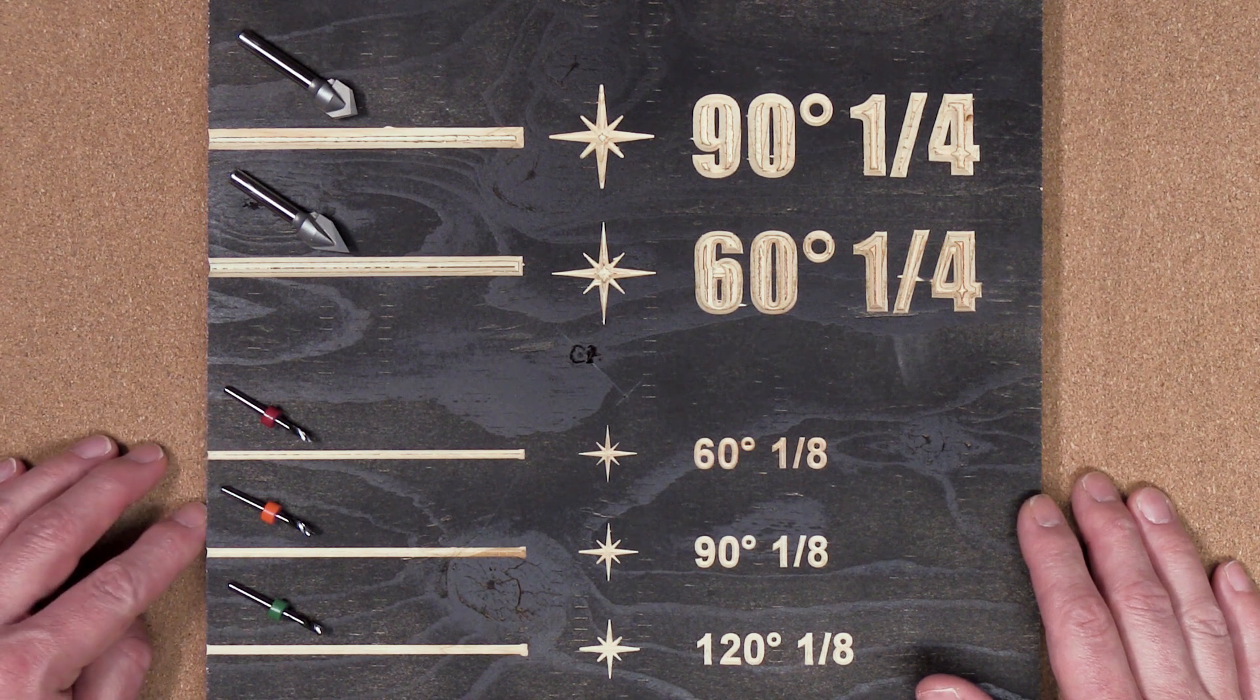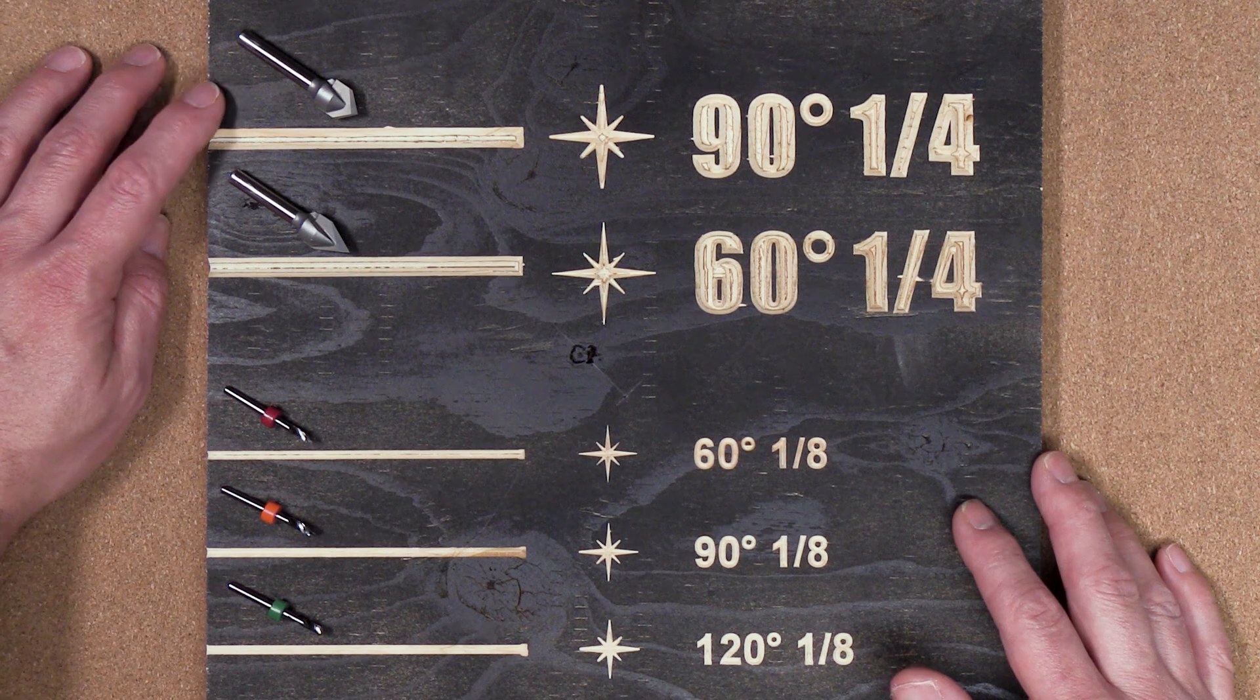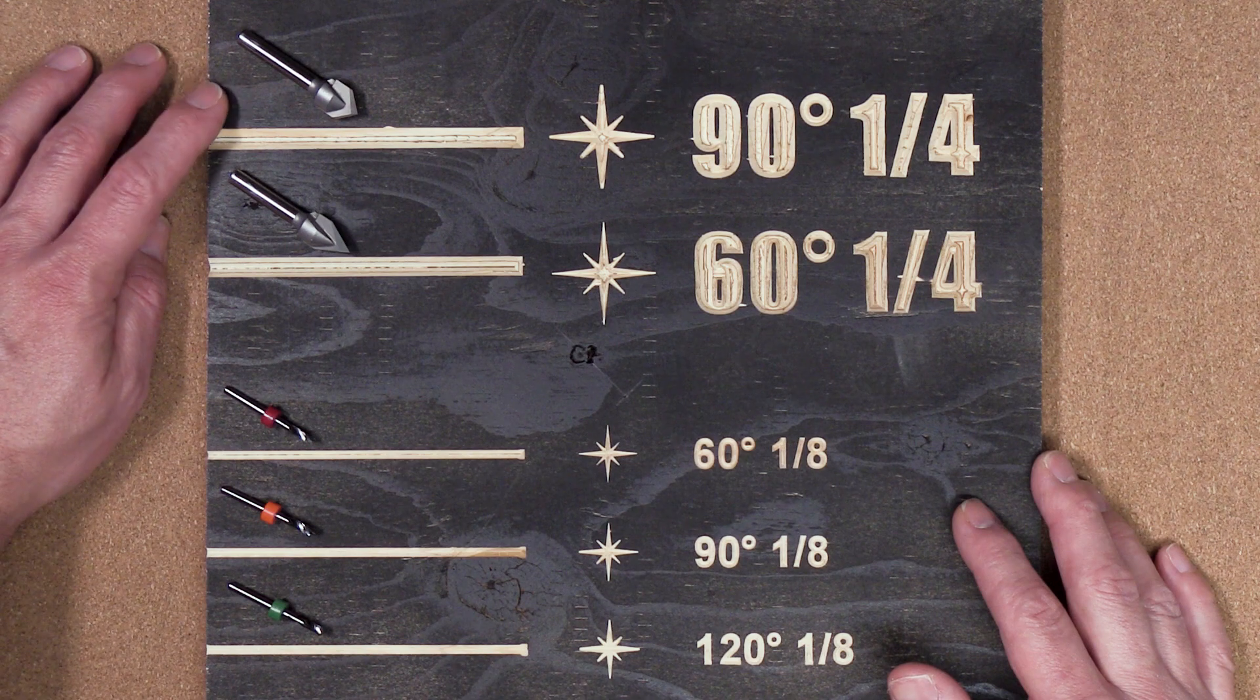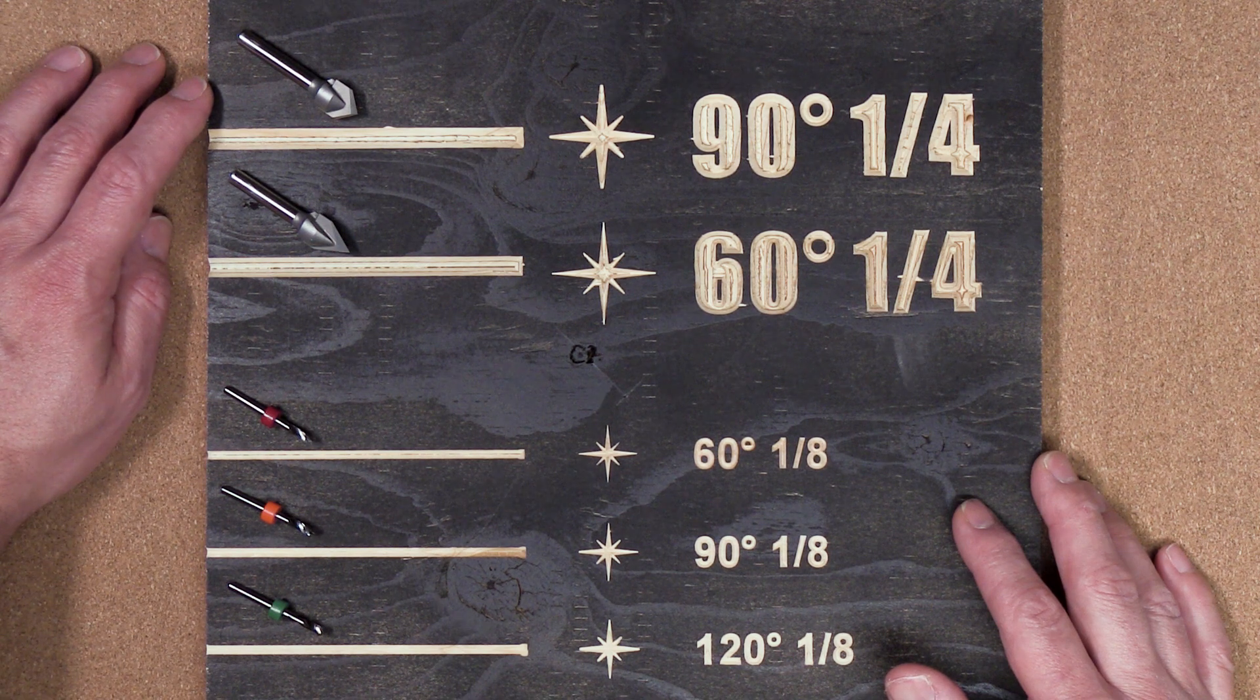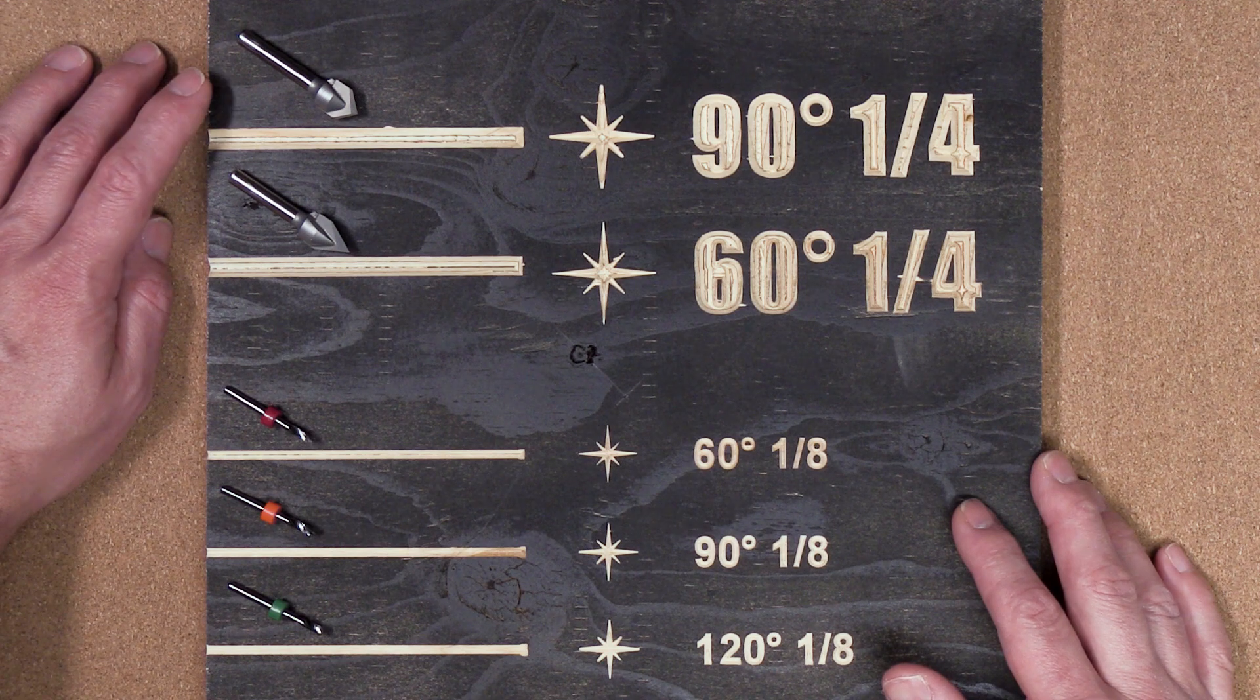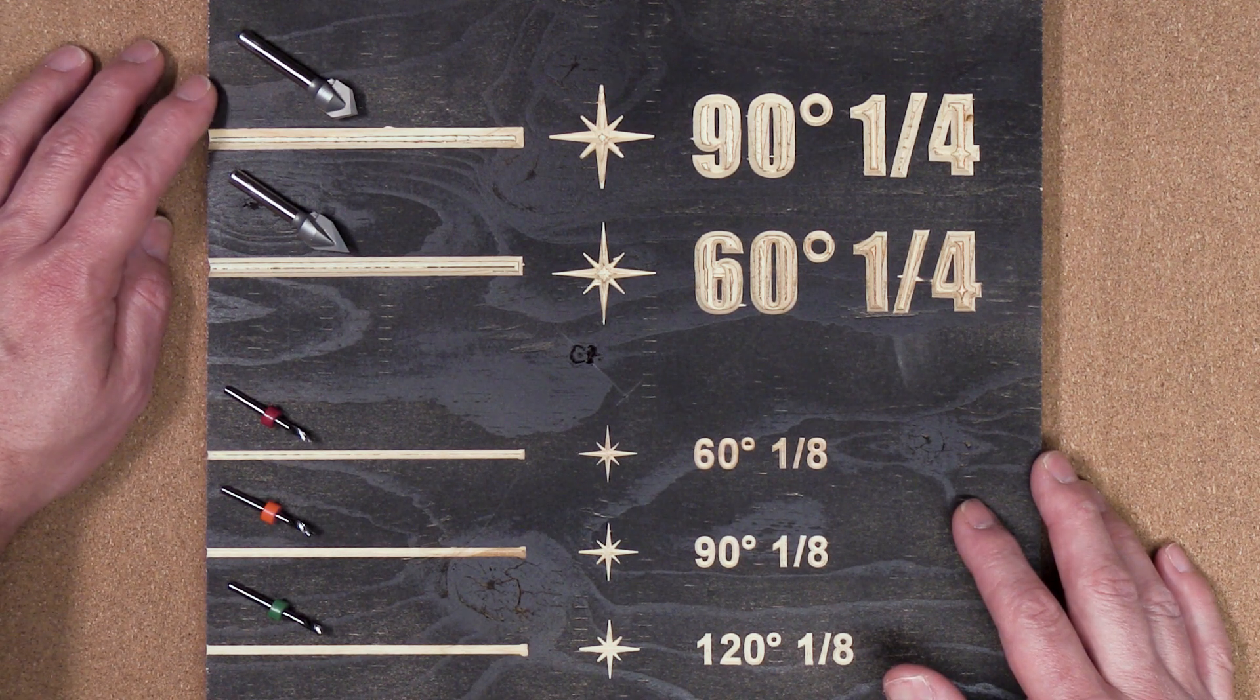A wider V-bit gives you a wider, shallower cut, while a V-bit with more of an angle gives you a deeper, narrower cut. The wider angle V-bits also allow you to remove more material quicker, while the narrower angle bits allow you to have a more precise and detailed cut.